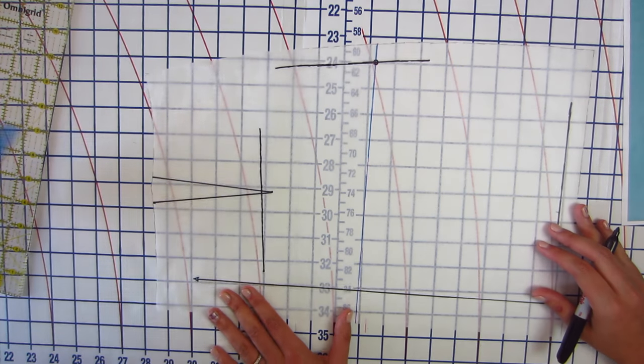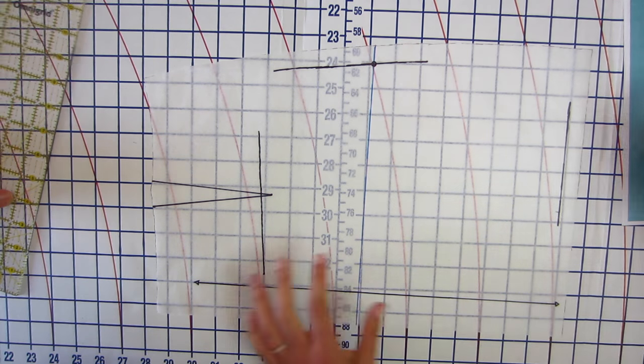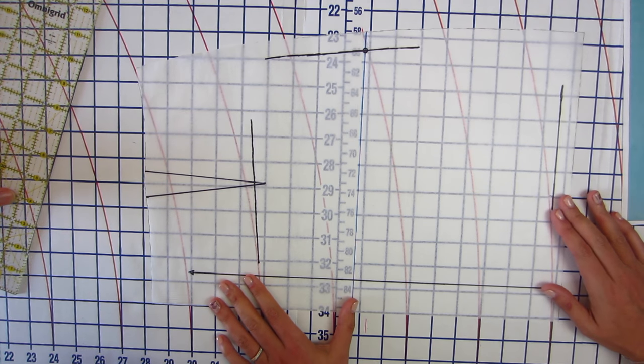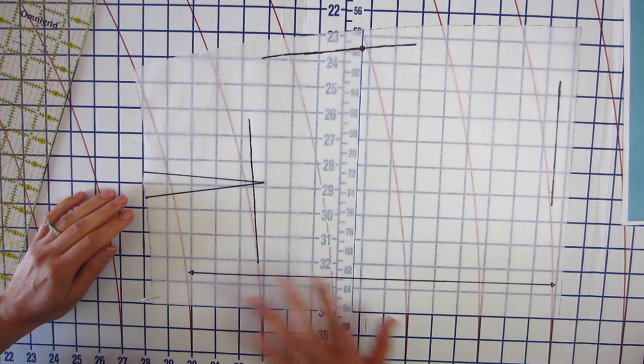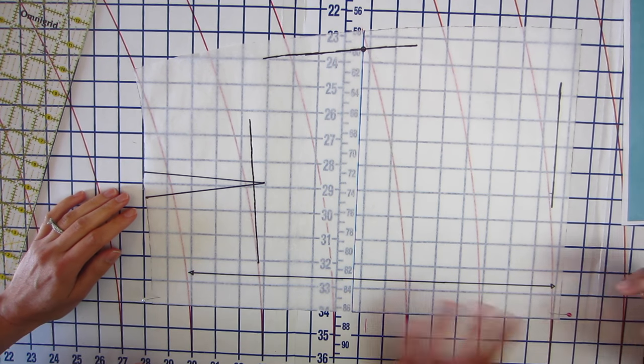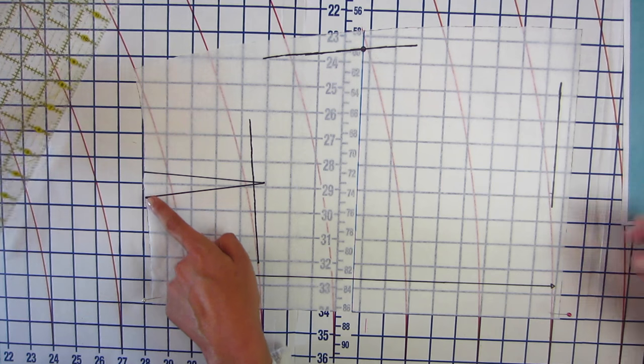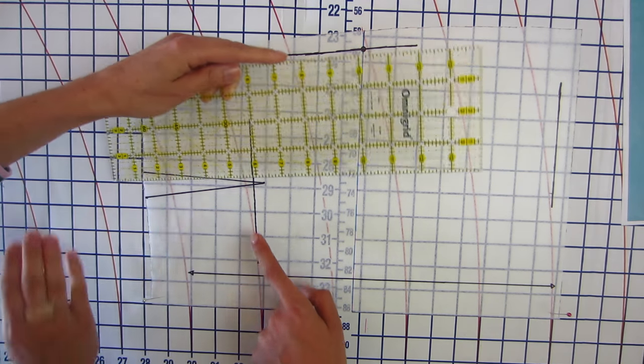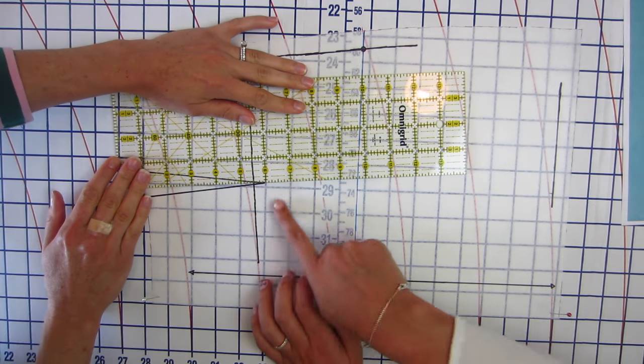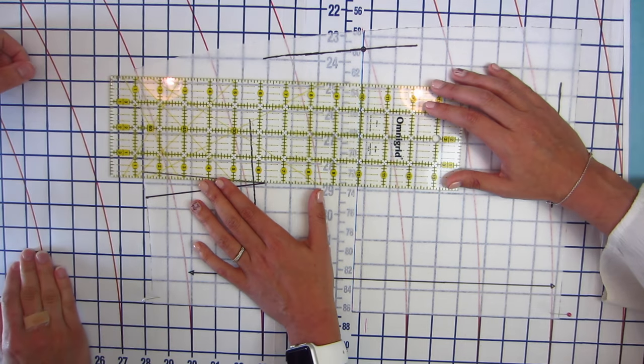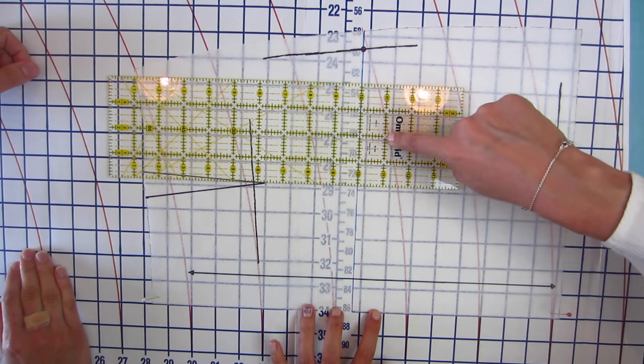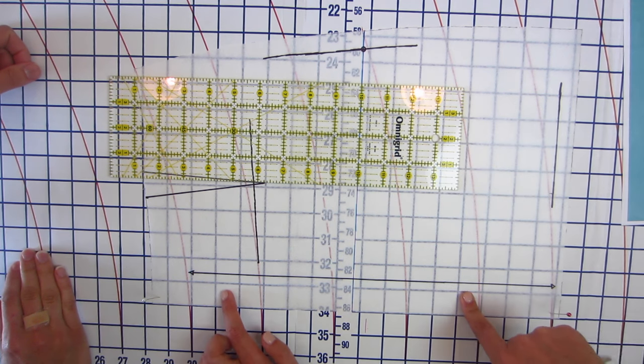The next line that we are going to draw, go ahead and pin down the center back seam so we're super straight. You're going to want to make a line that goes straight through the middle of the dart all the way down to the hem. So technically it's going to be perpendicular to the line that we just drew and parallel to the grain line.